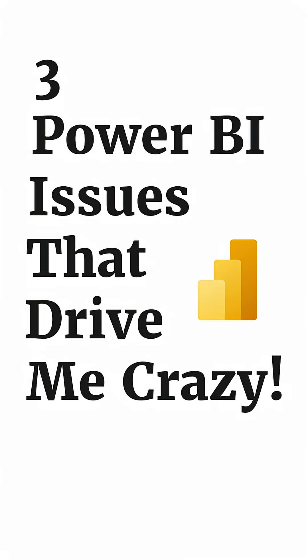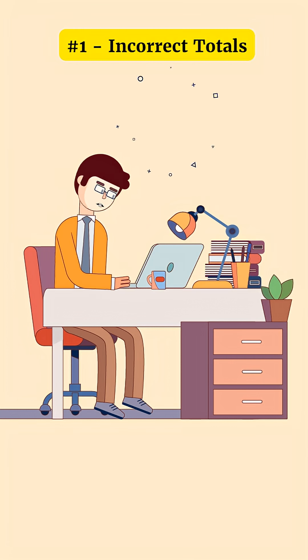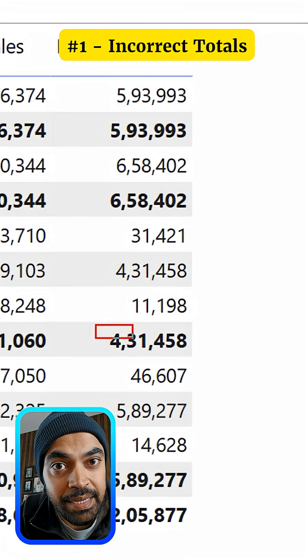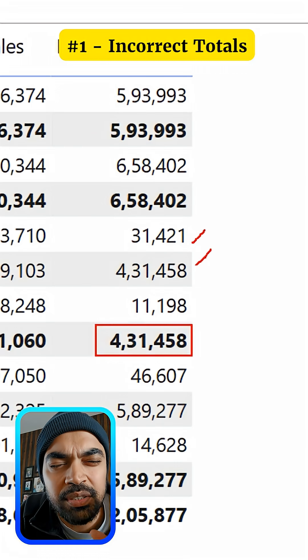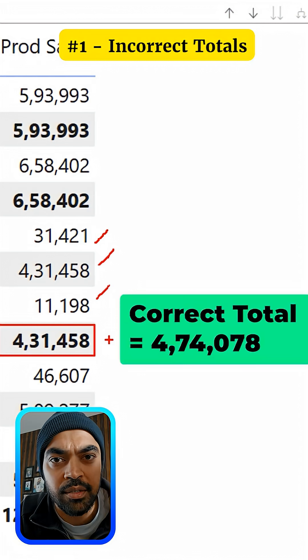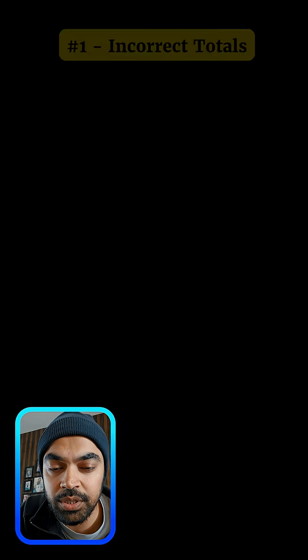I use Power BI a lot — I literally run a business off of it — and here are my top three things that I hate in Power BI. Number one: a naive user who doesn't understand the technicalities of Power BI is often going to think that totals are incorrect for semi-additive calculations. Power BI should definitely do something to at least warn the user that the rows are not matching up to the totals.